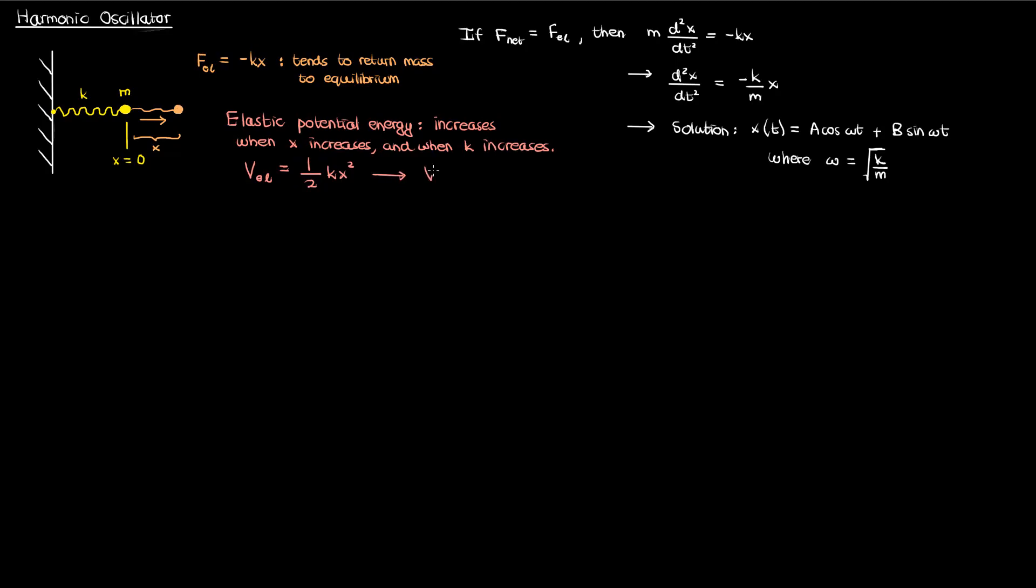We can also write this elastic potential energy in terms of mass and omega as half m omega squared x squared. This is one of the motivations for using the quantum harmonic oscillator, this potential energy expression for a mass oscillating on a spring.